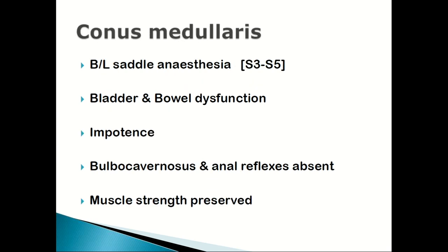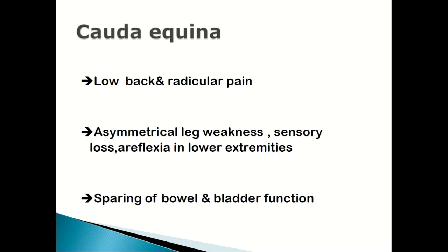Conus medullaris injury causes saddle/perineal anesthesia at the S5 level, bowel and bladder dysfunction, and impotence. The bulbocavernosus reflex is absent but muscle strength is preserved. In cauda equina syndrome, there is low back pain, asymmetrical leg weakness, sensory loss, areflexia in the lower extremities, but bowel and bladder function may be spared — these are peripheral nerve-type symptoms.